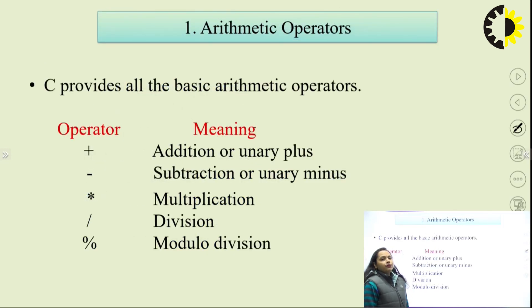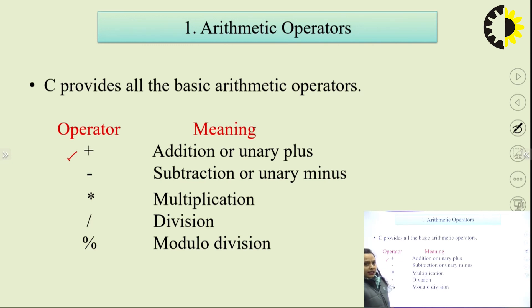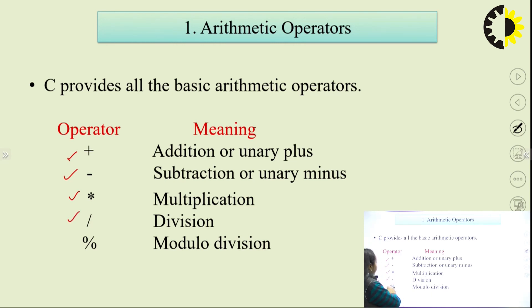As we are all very much familiar with arithmetic operators — from childhood we have been doing all types of calculations. Arithmetic operators are basically addition, subtraction, multiplication, division, and modulo division. Here we have these symbols and their meanings. First we have the plus operator — addition or unary plus. Next, subtraction or unary minus. Then multiplication represented by an asterisk, then division, and modulo division.